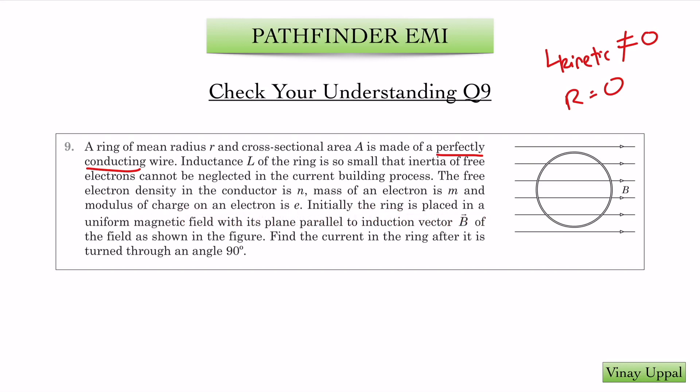Initially, the ring is placed in a uniform magnetic field with its plane parallel to the induction vector B. You can see the diagram. I am going to take the area vector inwards. That is a choice. I have denoted the area vector of the loop by A dash and that is a choice. I can take it outwards or inwards. It won't make a difference to the final answer.